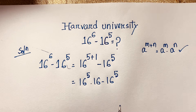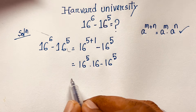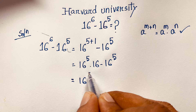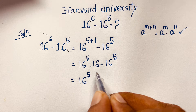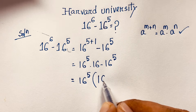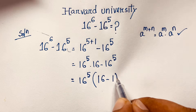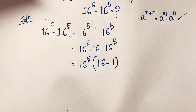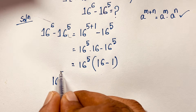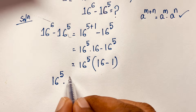Now you can see that 16 power 5 appears in both terms, so 16 power 5 is common. Factoring it out, we get 16 power 5 times 16 minus 1, which is 16 power 5 times 15.